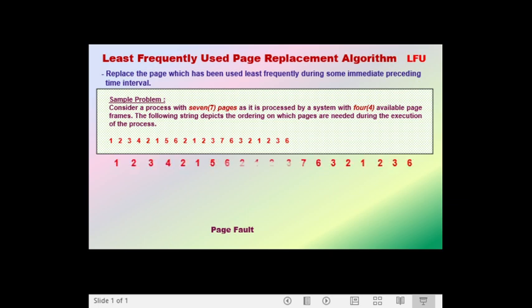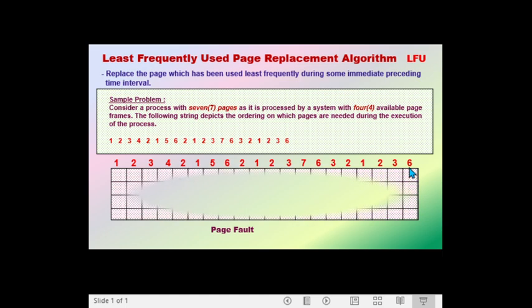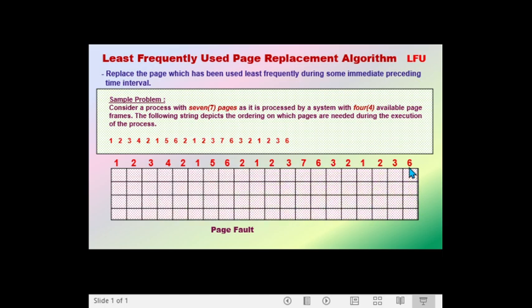Again, we have here the order in which pages are needed during the execution of the process. The reference string is: page 1, 2, 3, 4, 2, 1, 5, 6, 2, 1, 2, 3, 7, 6, 3, 2, 1, 2, 3, and the last page is page 6. And we have here our available frames: frame 1, frame 2, frame 3, and frame 4.